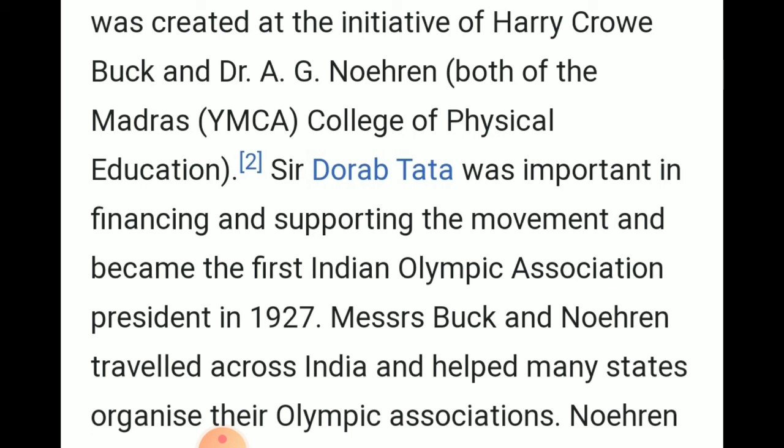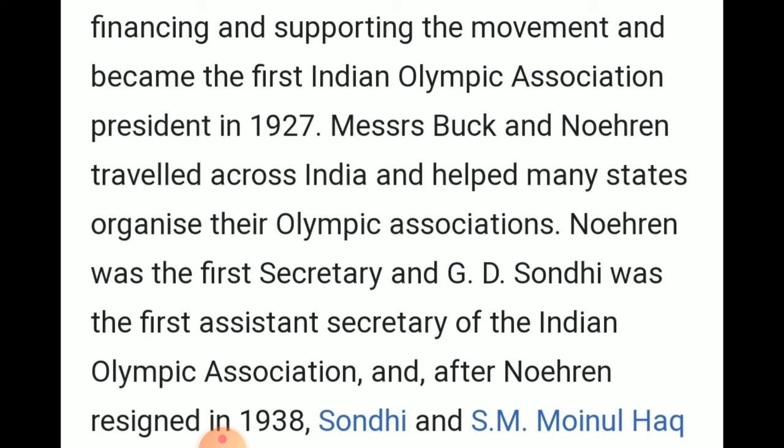Major Buck and Noran traveled across India and helped many states organize their own Olympic Associations — such as the State Olympic Association of Uttar Pradesh, Bihar, Jharkhand, and Delhi. The Indian Olympic Association was formally established in 1928, with Noran as the first secretary and G.D. Sondhi as the first assistant secretary.